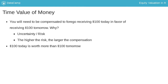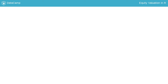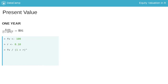Suppose you could have invested the $100 in a comparable investment and earn 10% between today and next year. This means that you would only need to put in $91 today at a 10% return to get $100 next year. To see how we get to $91 in R, let's look at the code on the slide. First, we take the future value FV, which is equal to 100, and then divide it by 1 plus R, or 10%. This gets us to $91.